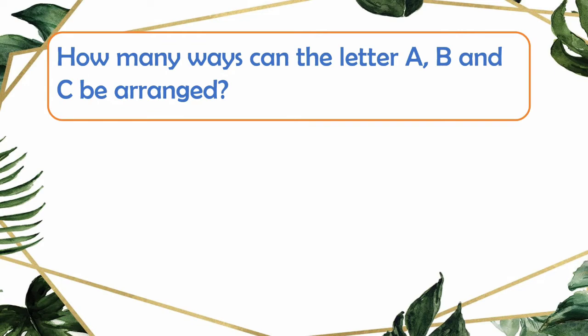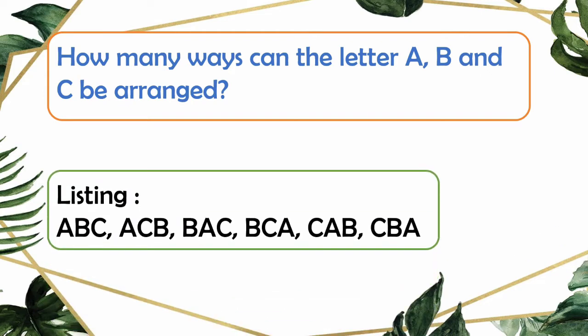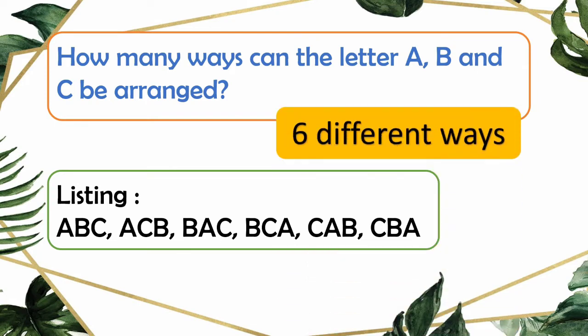Let's have a first example problem. How many ways can the letters A, B, and C be arranged? You may use the listing technique. We have the following arrangements: A-B-C, A-C-B, B-A-C, B-C-A, C-A-B, and C-B-A. Counting all the listed arrangements, we found six different ways to arrange the letters A, B, and C.